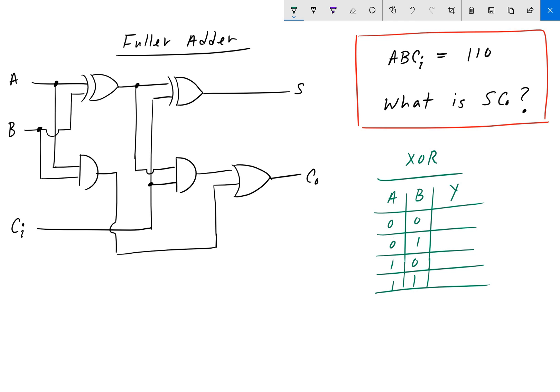And we saw that it is a 1 whenever A and B are not the same. So, this is 0, 1, 1, 0.